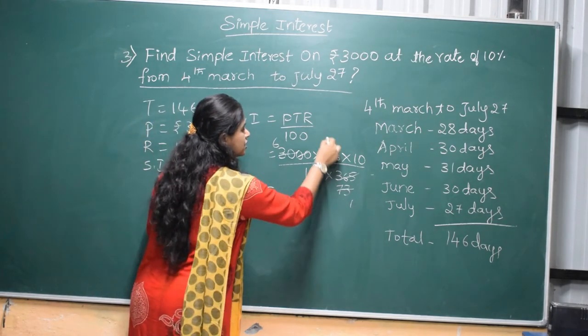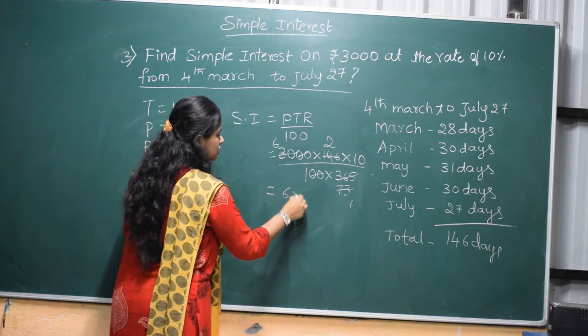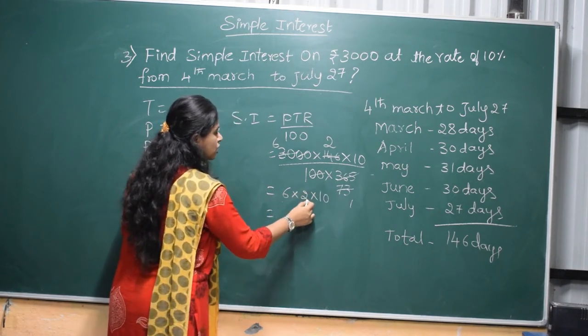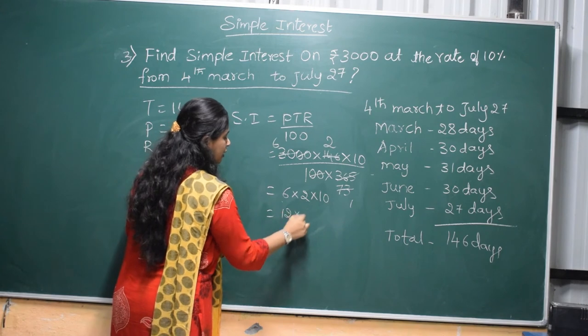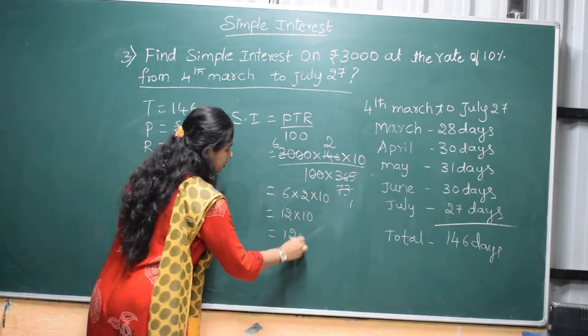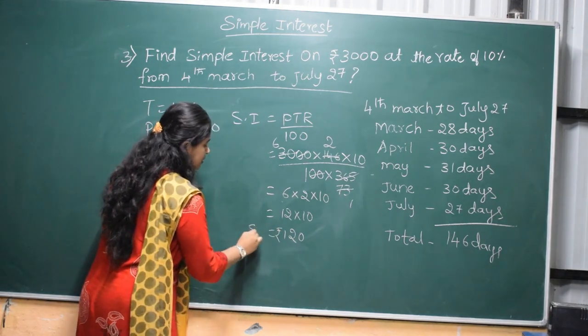Now, take 73 ones, 73 twos. So now, 6 into 2 into 10. Multiply, 6 into 12 into 10. We have got the answer, 120. Rupees 120, Simple Interest.